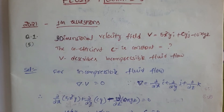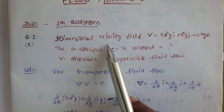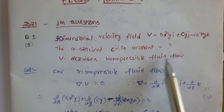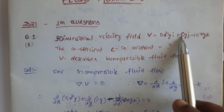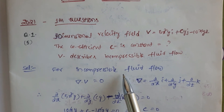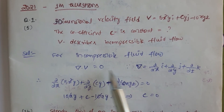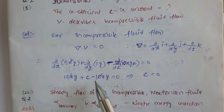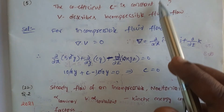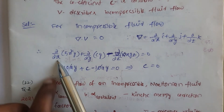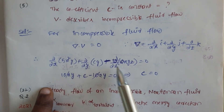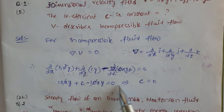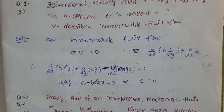In the problem, a three-dimensional velocity field is given, with a quantity c as the constant, and v is described as an incompressible fluid flow velocity. We have to find the constant value c. Since it is incompressible fluid flow, ∇·v equals zero. The vector operator dot product with the velocity vector gives: by differentiating with respect to x, y, and z, we get 10xy plus c minus 10xy equals zero. From this, c equals zero.